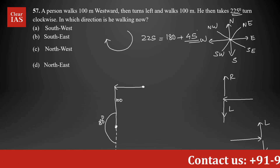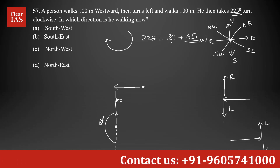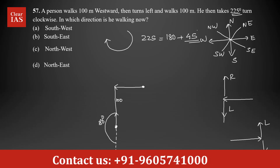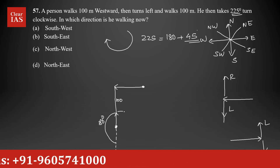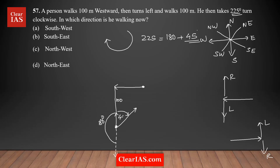After turning 180 degrees he is facing north, and he still needs to turn an additional 45 degrees clockwise. After that 45-degree clockwise turn, the direction he will be facing is northeast. So the answer is northeast — because east is here, north is here, and 45 degrees after north going clockwise gives northeast. The correct answer is option D.